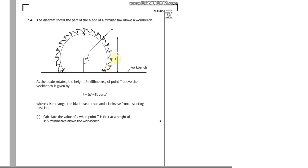I'll probably use this question and we'll go through that. So I'll calculate the value of x when the point T is first at a height of 115 above the workbench. So I'm trying to work out when that point, you get point T, where the h there is 115 above the bench.